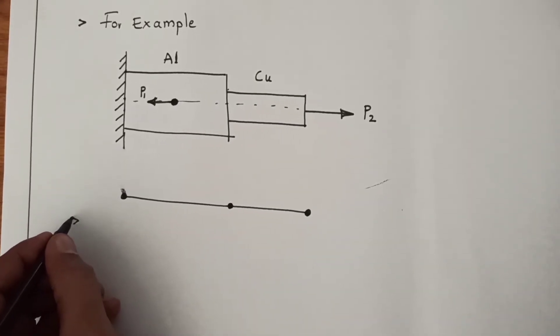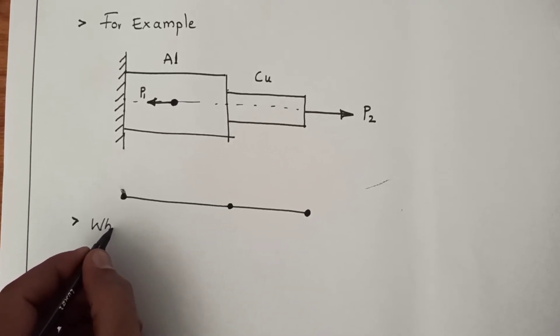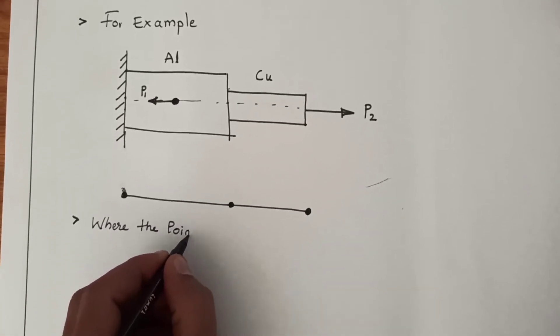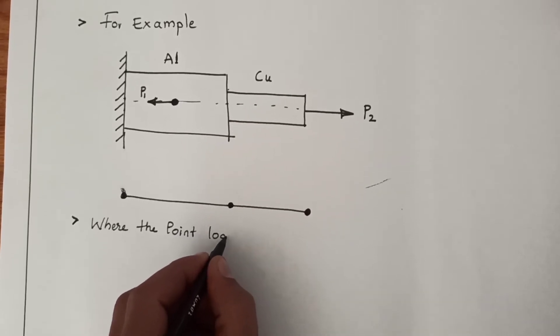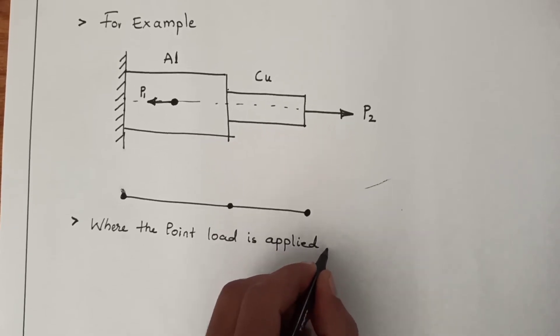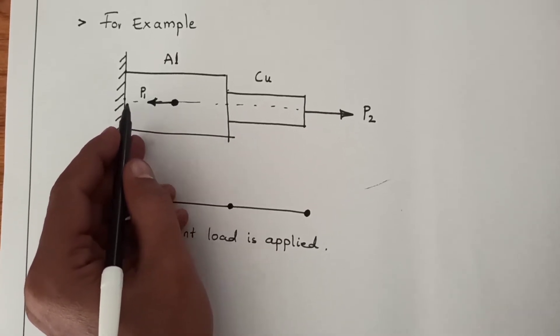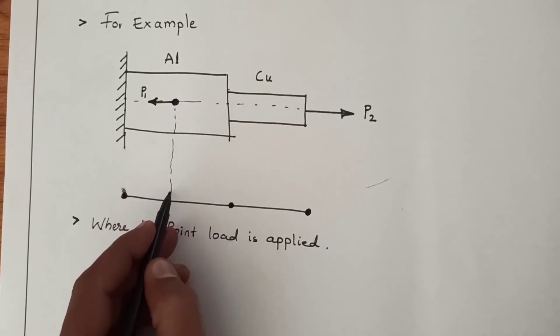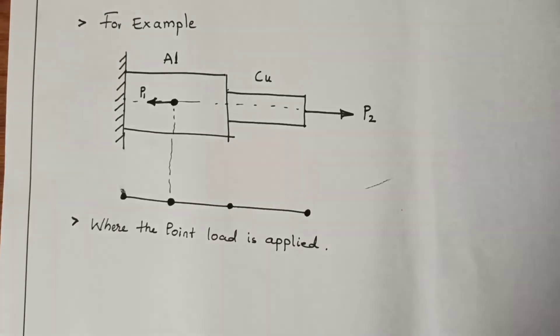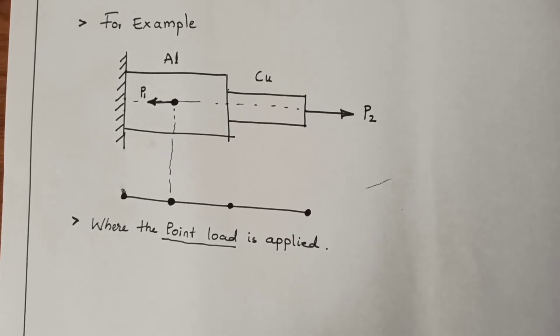First condition is when the point load is applied, where the point load is applied, there you need to take the nodes. Now where point load is applied at here also, it means there should be one more node here and at the end it is already there. So whenever there is a load applied, there you have to take the nodes.